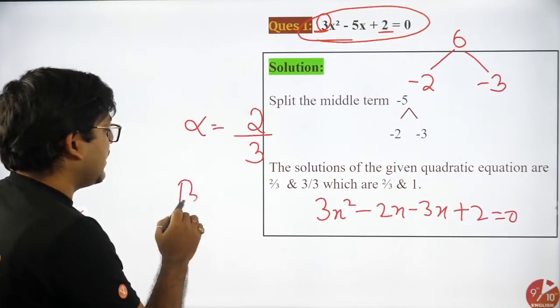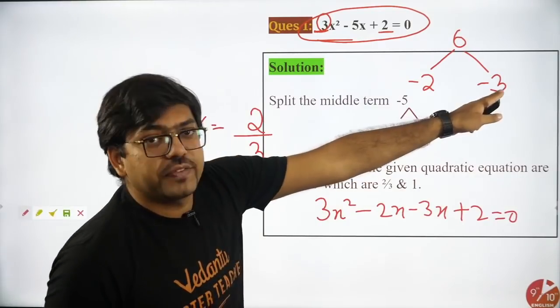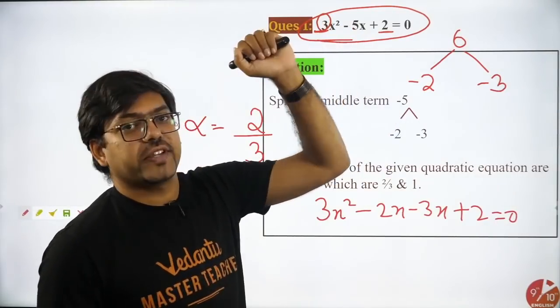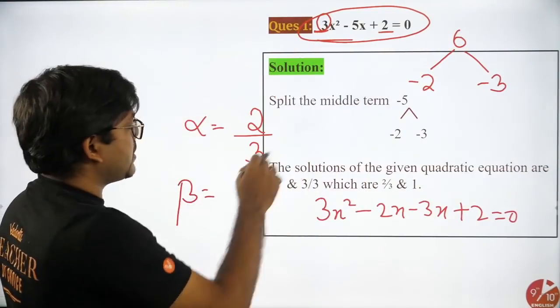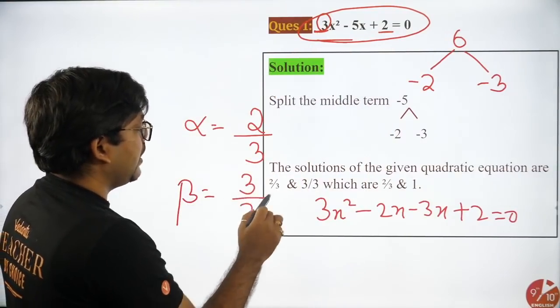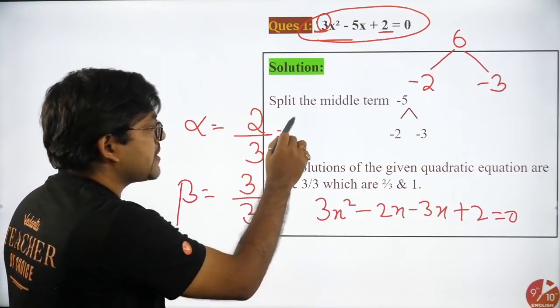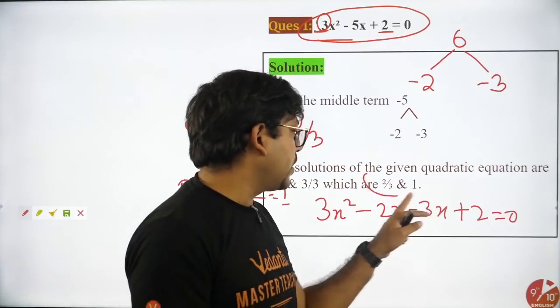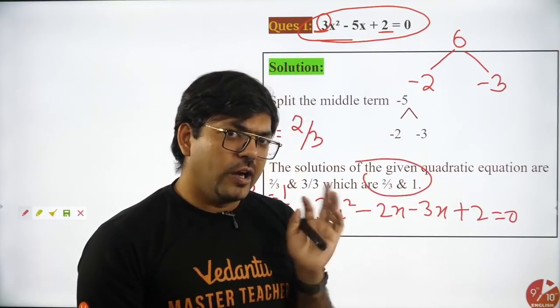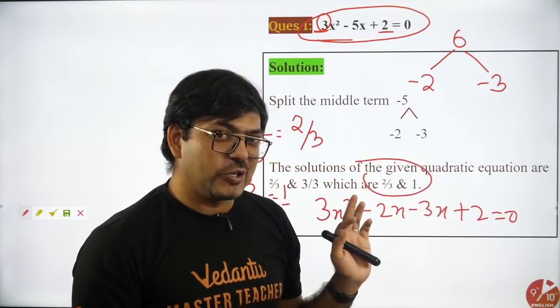Second zero, that would be again opposite sign of this divided by the coefficient of x². That is minus three opposite sign, that is plus three divided by three. Hence value is one. So you got a zero two by three and you got a zero one. That's the answer. Two by three and one.